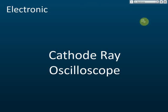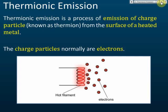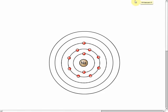Okay, cathode ray oscilloscope — let's start from thermionic emissions. Now, what is thermionic emission? To understand thermionic emissions, we need to go back to what you have learned in chemistry — the structure of the atom in Form 4 chemistry.